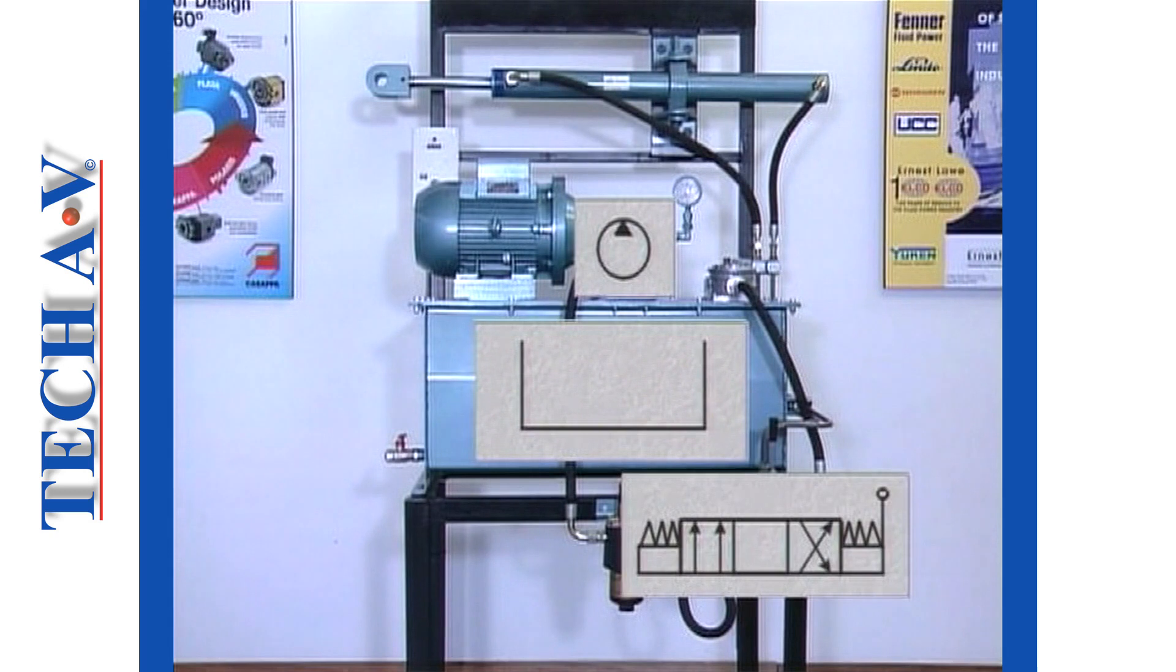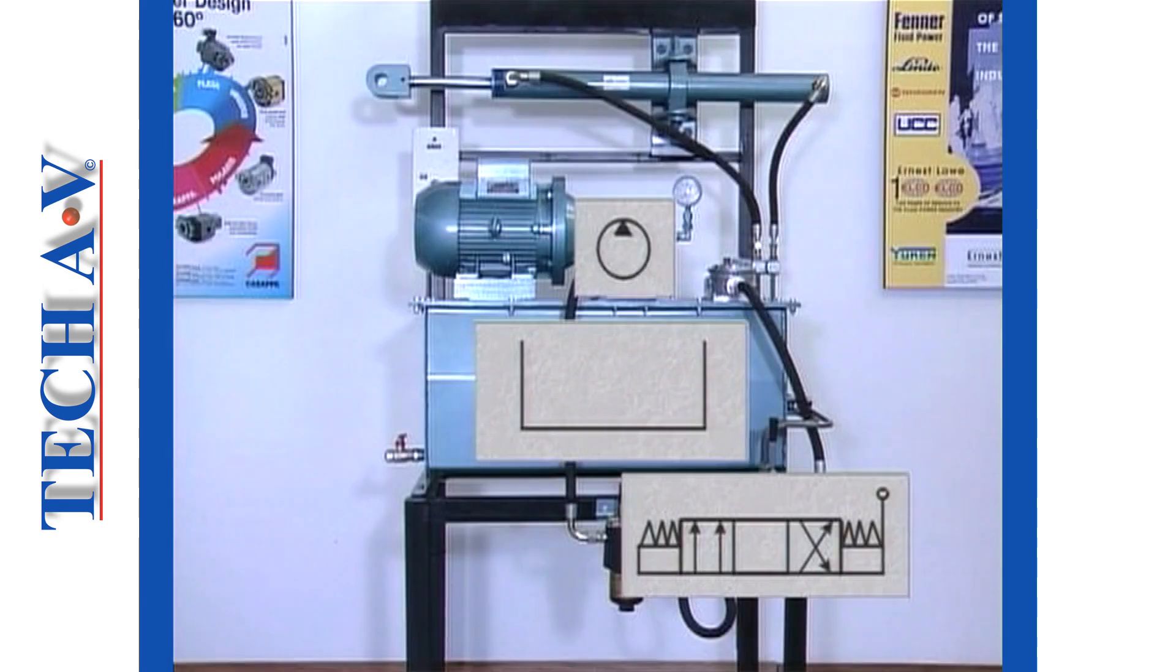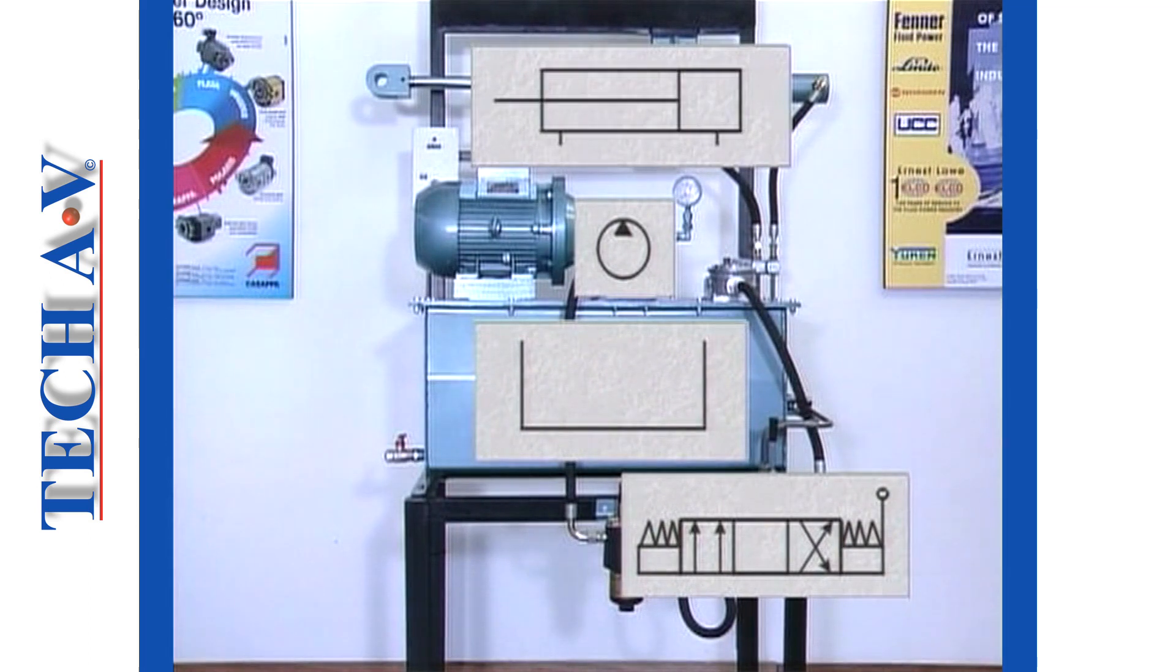Next, we have the directional control valve. This symbol requires a fair amount of explanation, which we shall discuss later. We move on to the symbol for our particular actuator, which is a double-acting cylinder.